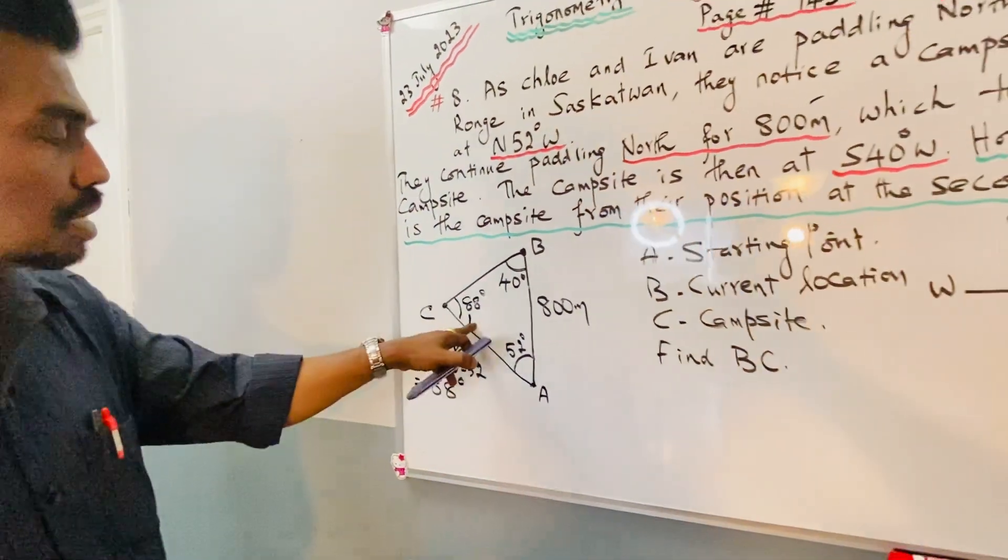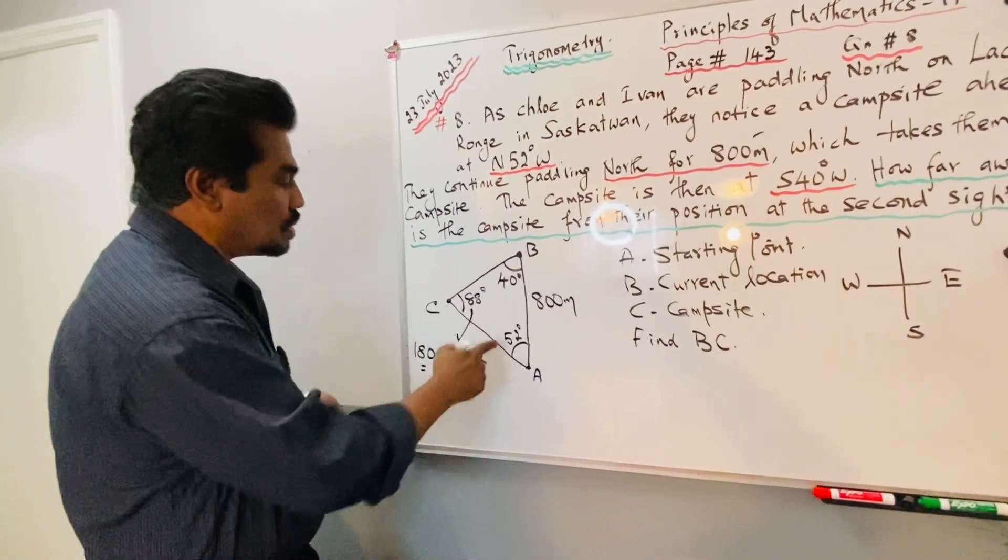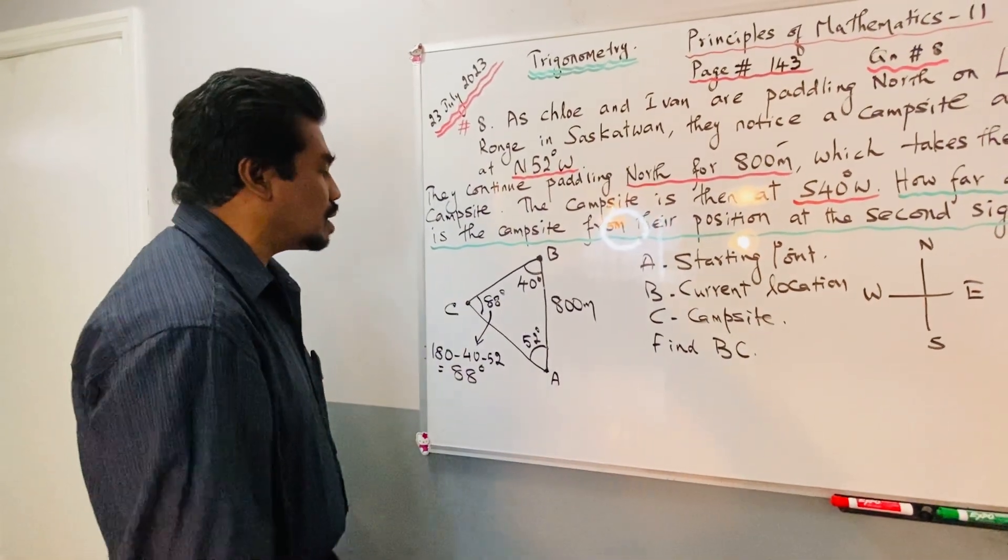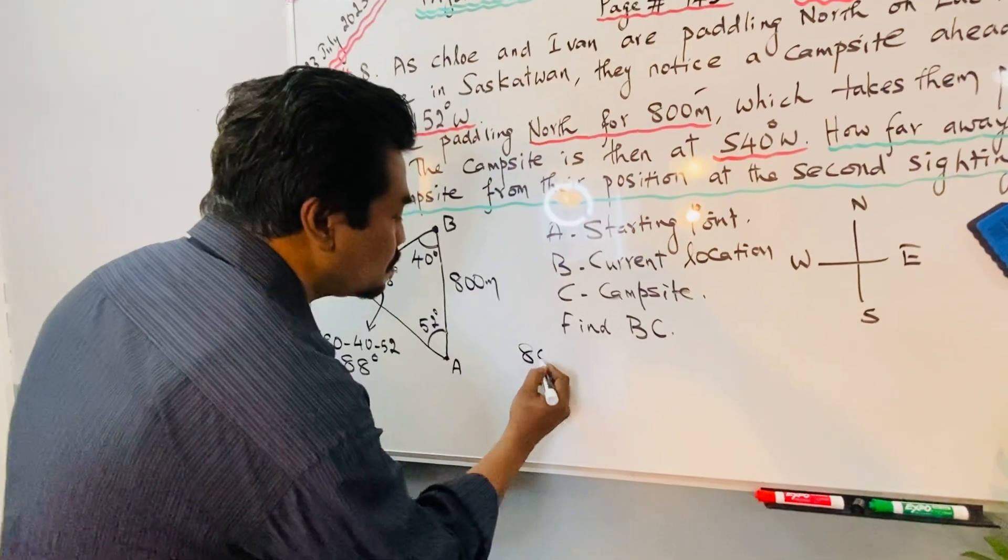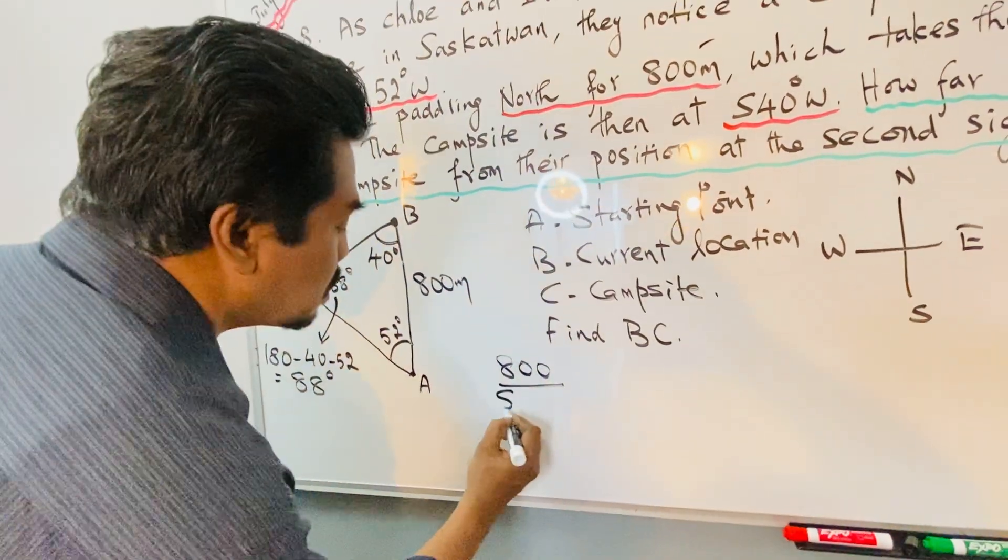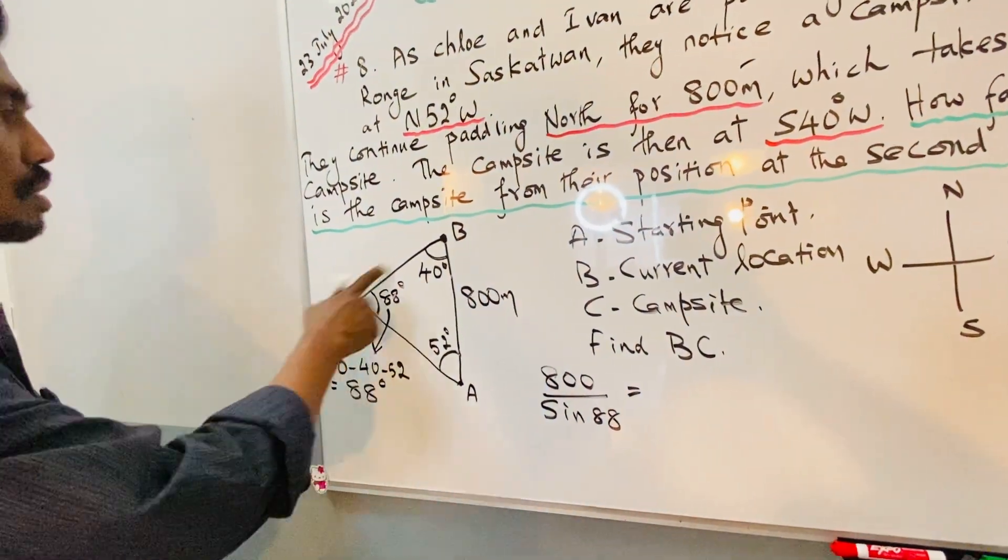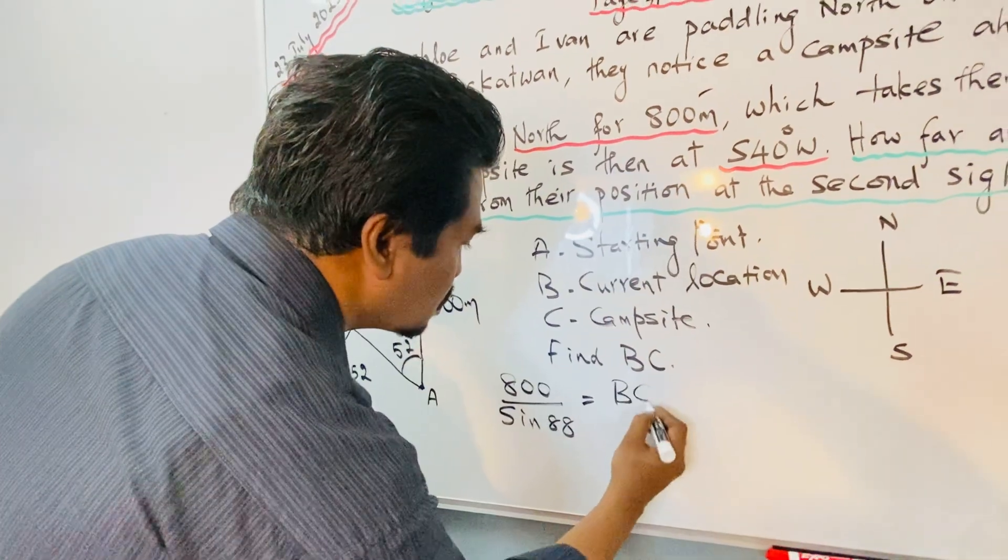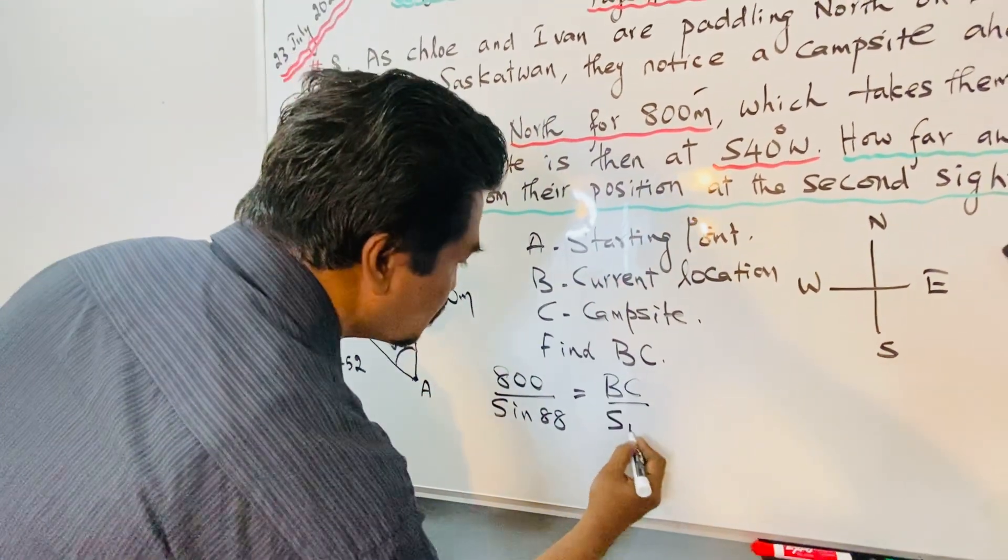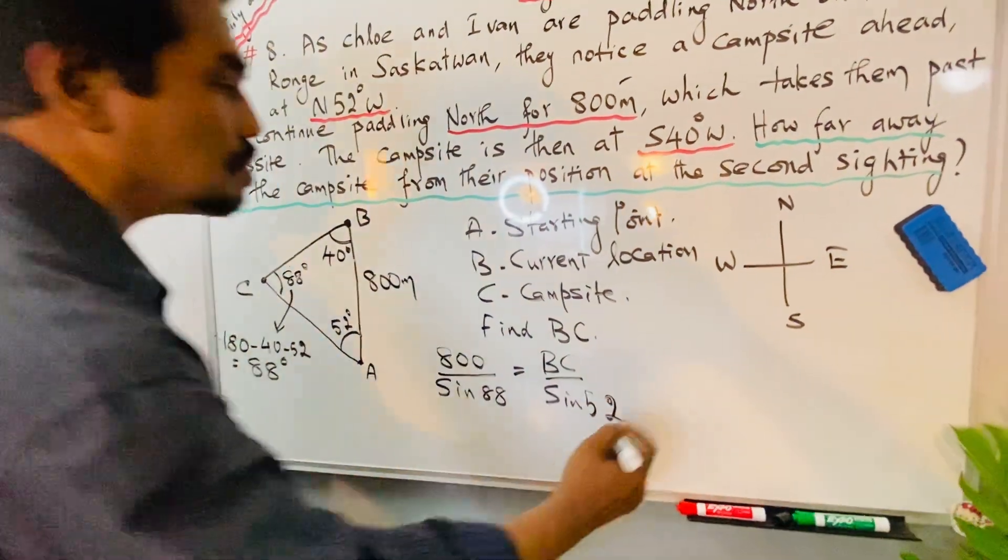Now we know this angle, we know this side, and we have to find BC. We know the angle so we can apply the sine law. 800 over sine 88 will be equal to BC over sine 52. Now cross multiplication.